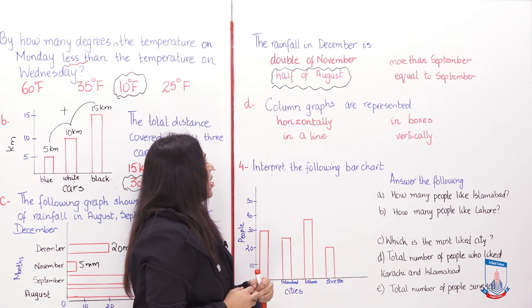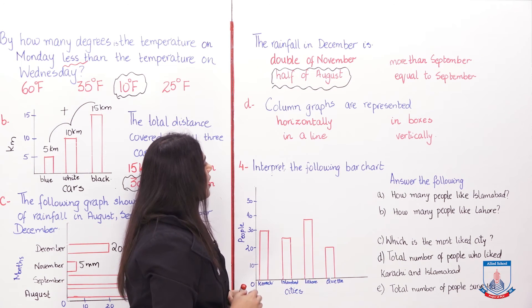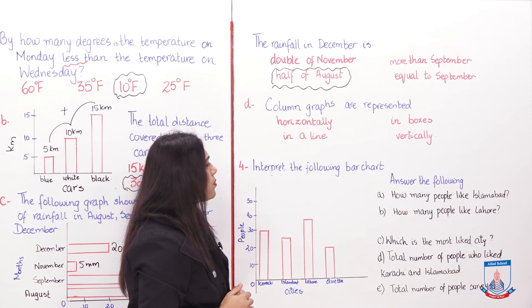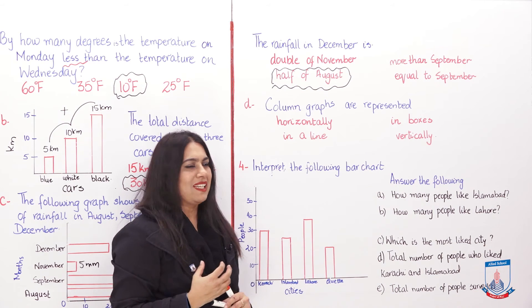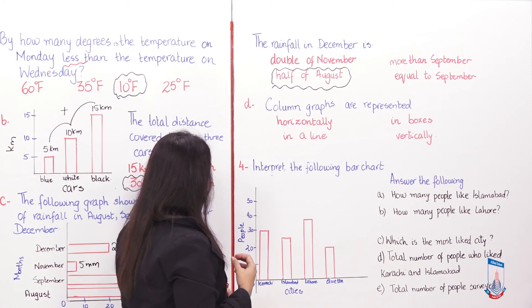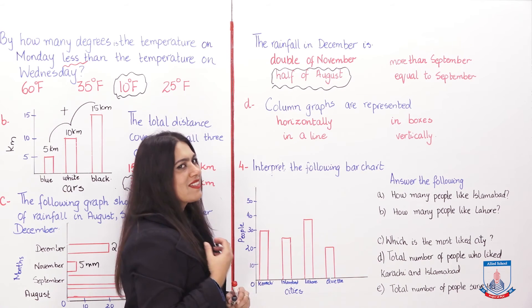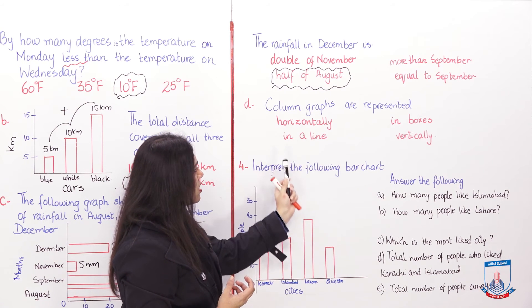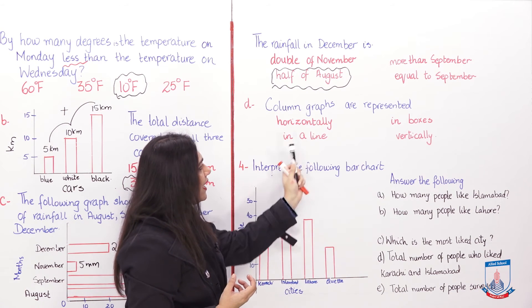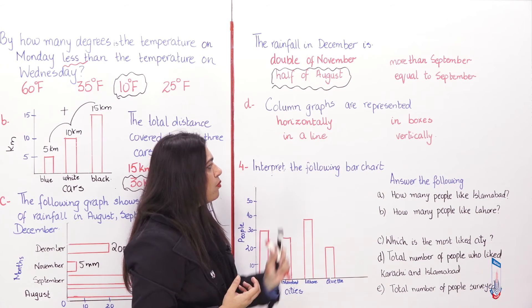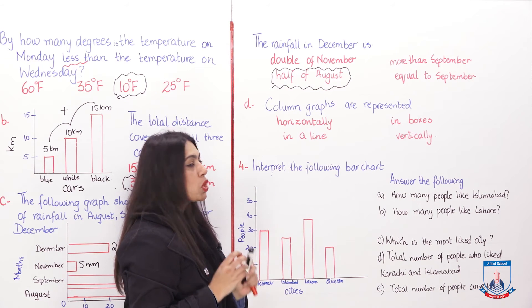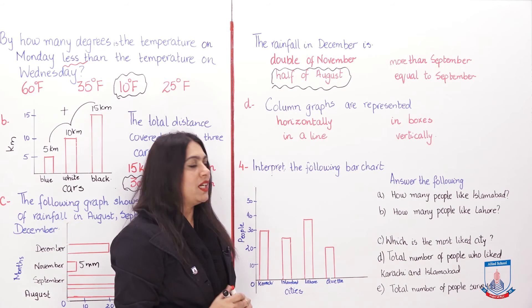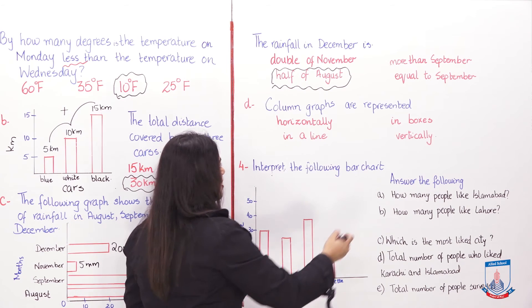Part D: 'Column graphs are represented —' with options horizontally, in a line, in boxes, or vertically. Recall that column graphs are always represented vertically, so the correct option is vertically.